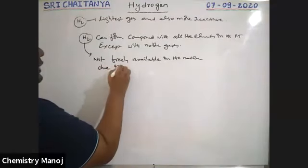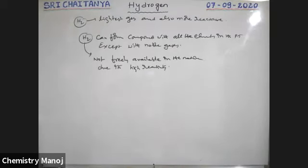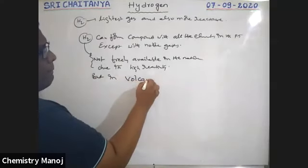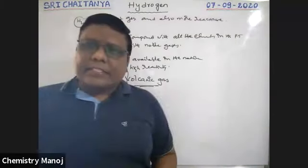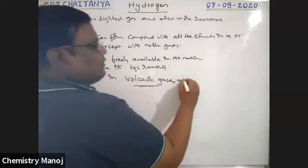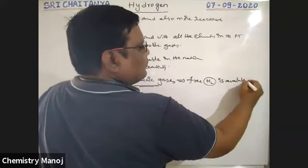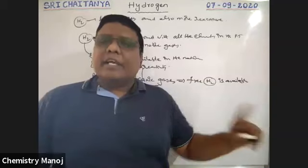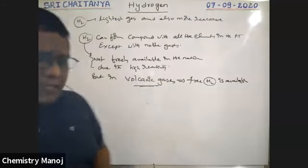Due to its high reactivity, hydrogen is not freely available in nature. But in volcanic gases — gases evolved from volcanoes — free H2 is available. Except in this case, in all remaining cases in nature, free H2 is not available. It is always available in a combined state.